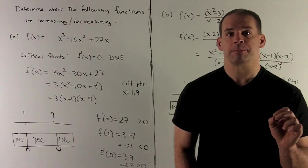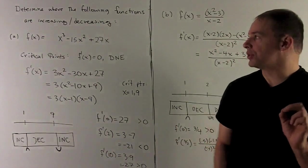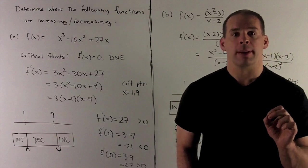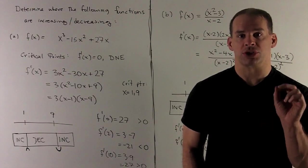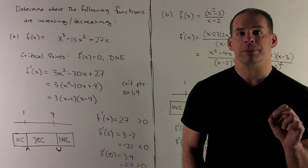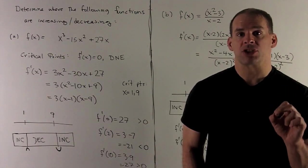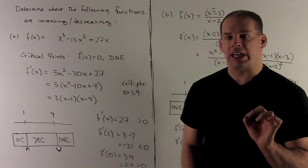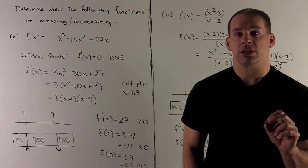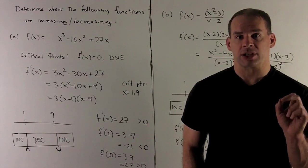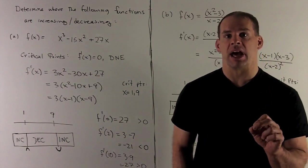So our first function is going to be f of x equal to x cubed minus 15x squared plus 27x. So to start, I take the derivative. What do we get? We get 3x squared minus 30x plus 27. So we factor this. If 3 comes out, then what I'm left with is x minus 1 times x minus 9.